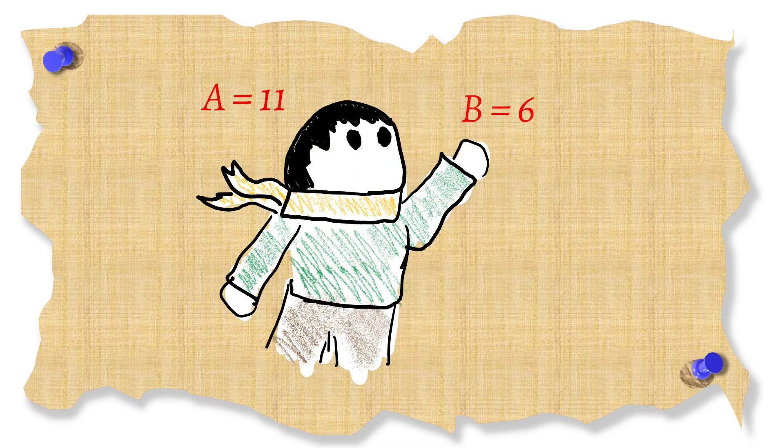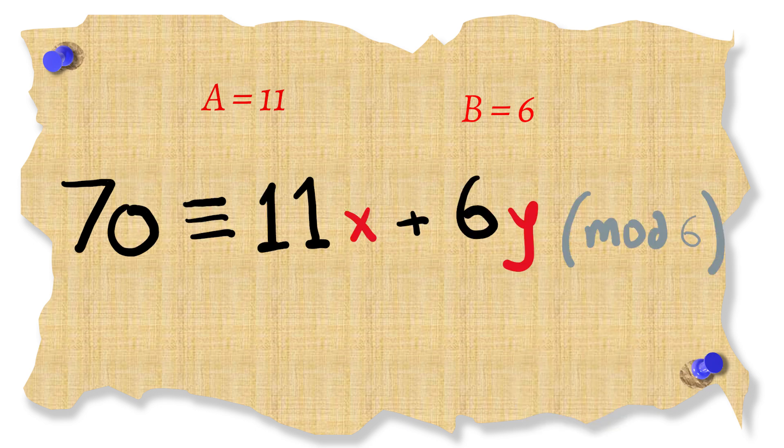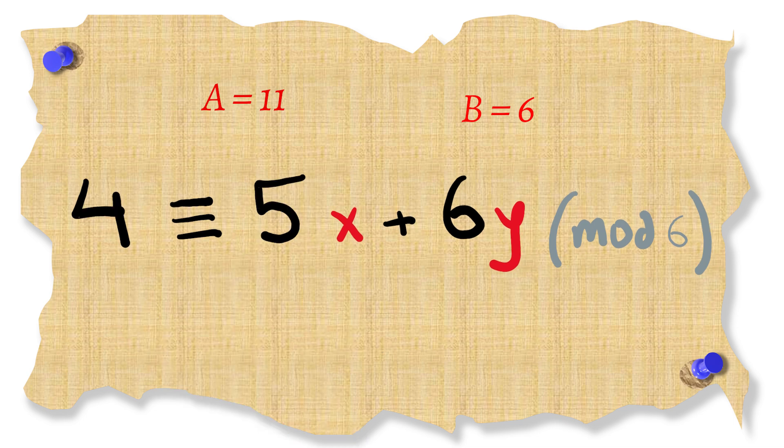Let A be 11 and B be 6. Suppose we want to write 70 as 11x plus 6y. Then we first take modulo 6 both sides which gives us 70 modulo 6 which is 4 and 11 modulo 6 which is 5.